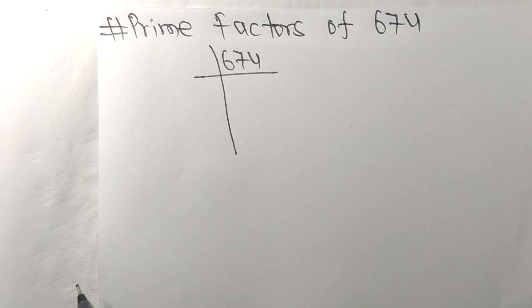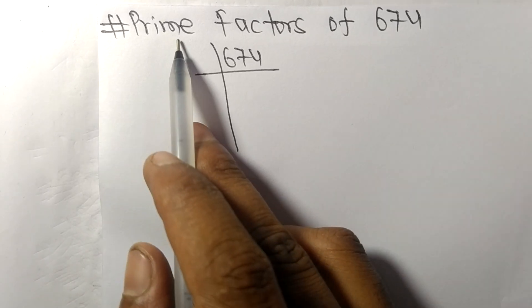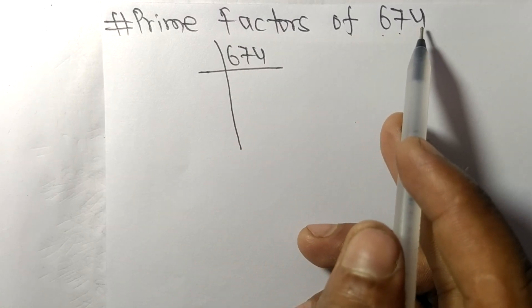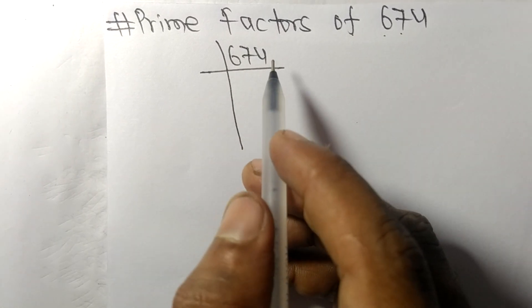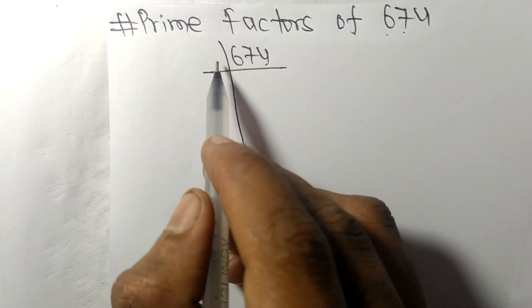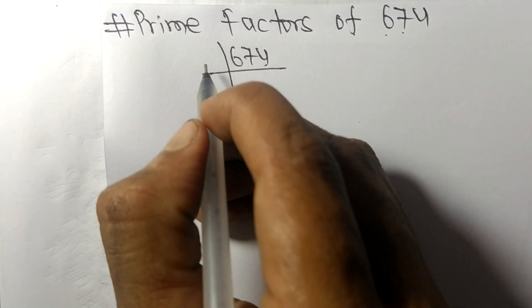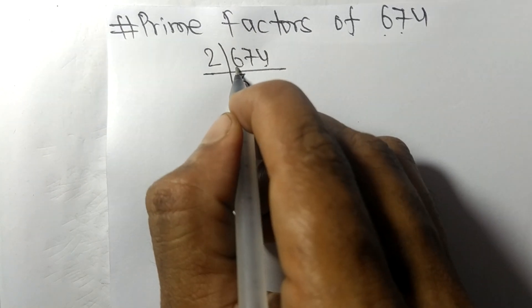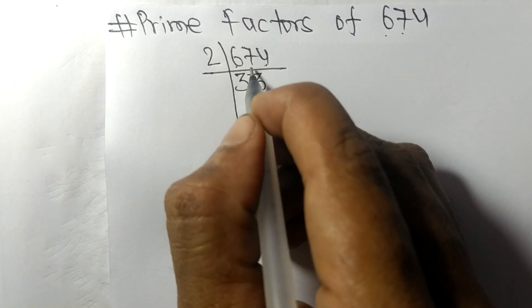Today in this video, we shall learn to find the prime factors of 674. Since it ends in the even number 4, this whole number is divisible by 2. 2 times 3 equals 6, 2 times 3 equals 6 remainder 1.